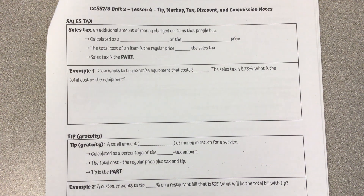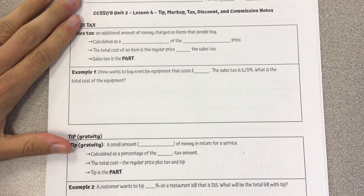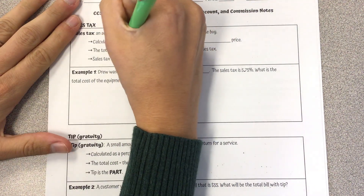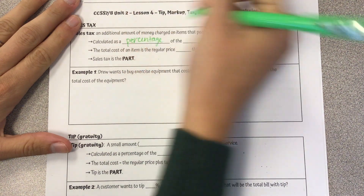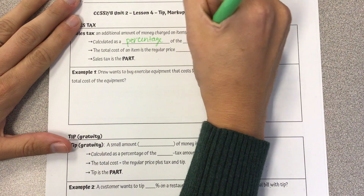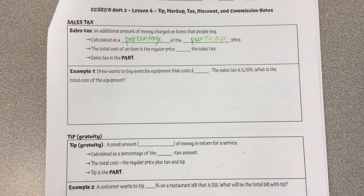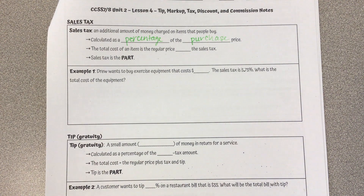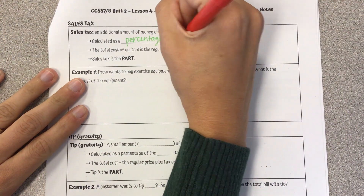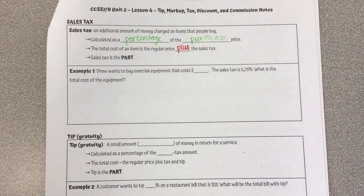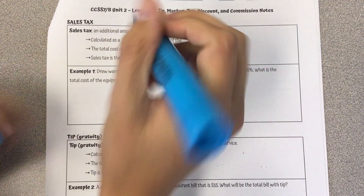It's broken down into sections. First, we're going to talk about sales tax. Sales tax is an additional amount of money charged on items that people buy. It is calculated as a percentage of the purchase price. The total cost of an item is the regular price plus the sales tax. It's important to note that the sales tax is the part.